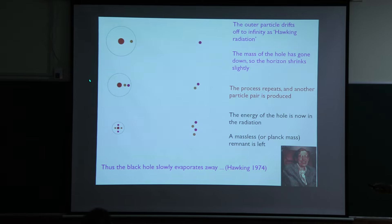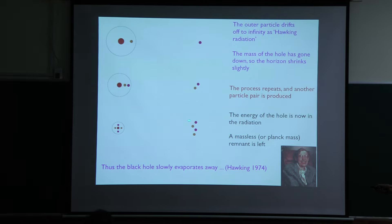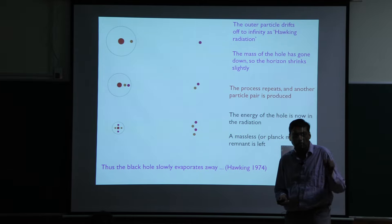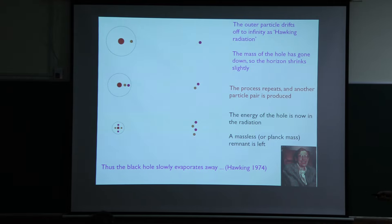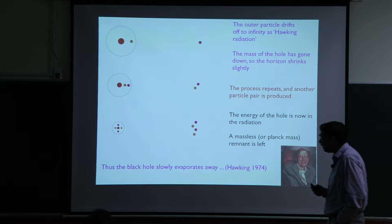So here's the whole Hawking process written out explicitly. The outer particle drifts out as radiation; because the energy of the infalling particle was negative, the whole mass of the black hole decreases, so the horizon radius GM over c squared becomes smaller. The process repeats — another particle comes out — and as this keeps going, the black hole keeps shrinking and more and more energy collects outside. Eventually the mass goes to zero and all the energy shows up in the radiation. That's what we call Hawking evaporation of the black hole. When it gets down to Planck size, classical gravity may no longer apply — people call that a remnant — but in any case most of the mass is gone and the hole evaporates away. That's Hawking's famous discovery of 1974.